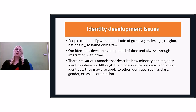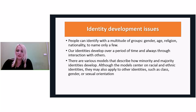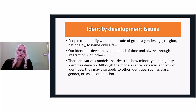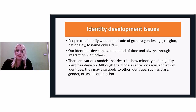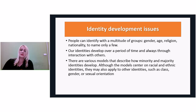Minority identity tends to develop earlier than majority identities. For example, straight people tend not to think about their sexual orientation identity often, whereas gay people are often acutely aware of their sexual orientation identity being different from the majority and develop that identity earlier. Similarly, while white people may develop a strong ethnic identity, they often do not think about their racial identity, whereas members of racial minorities are aware of their racial identities at an early age.